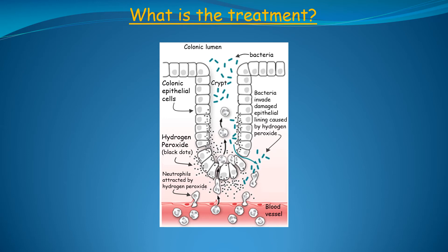With the available data, we can now predict the correct way of treating ulcerative colitis. We can also understand why all current medications fail to adequately treat or cure this disease. In the picture, we can see a single crypt of Lieberkuhn. The little black dots represent the hydrogen peroxide being secreted from the colonic epithelial cells — it is this hydrogen peroxide that is attracting neutrophils from the blood vessels just below. Hydrogen peroxide disintegrates the proteins holding the colonic epithelial cells together, causing the cells to fall apart, which allows stool bacteria to invade the epithelial lining of the colon, causing additional inflammation.